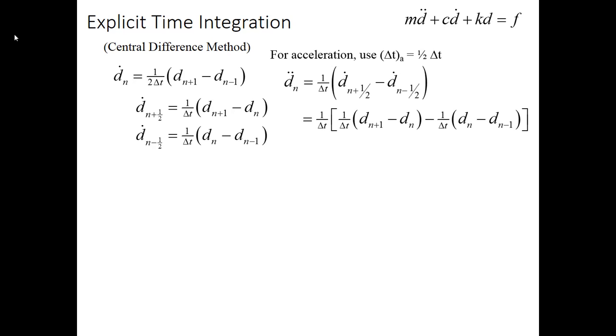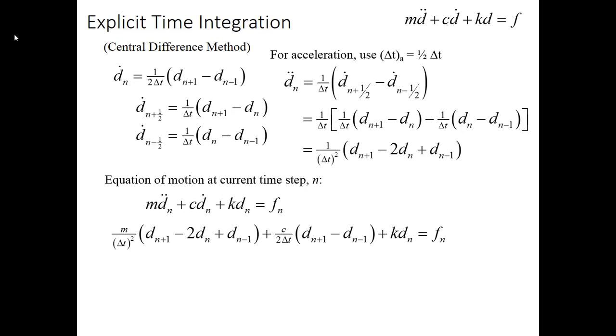So that then allows us to take our dN double dot, plug in the terms for the dN plus a half dot and dN minus a half dot. And then rearrange terms a bit and we get this expression for dN double dot. So the acceleration at the current time can be estimated based on the displacement at the future time, the displacement at the current time, and the displacement at the prior time, all put together. So going back to our equation of motion at our current time step, let's plug in this dN dot and dN double dot term. We get that the M over delta T squared, which is multiplied by the acceleration term, is the dN plus 1 minus 2dN plus dN minus 1. And then similarly, we add the C over 2 delta T for the dN dot, and then we get dN plus 1 minus dN minus 1. And then lastly, we haven't done anything to our stiffness term, so it's just plus kdN is equal to fN.